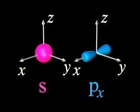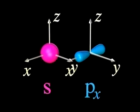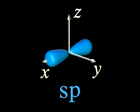When we mix an S and a PX orbital, we produce two hybrid orbitals called SP pointed in opposite directions along the X axis.